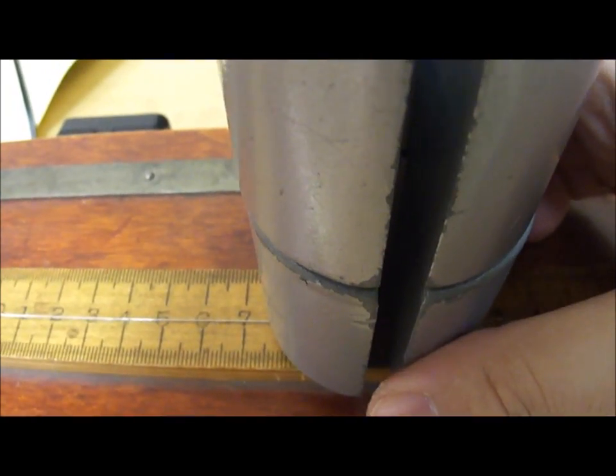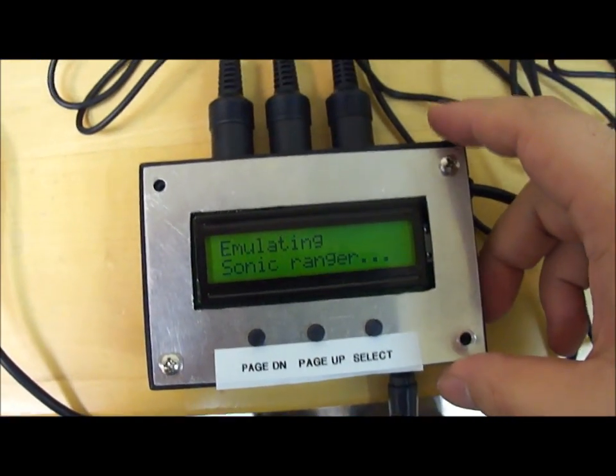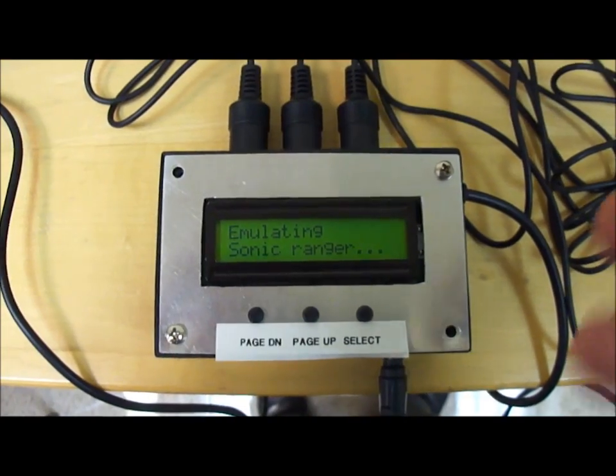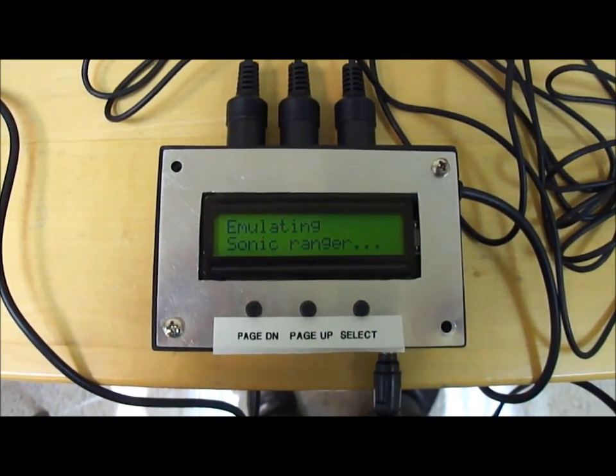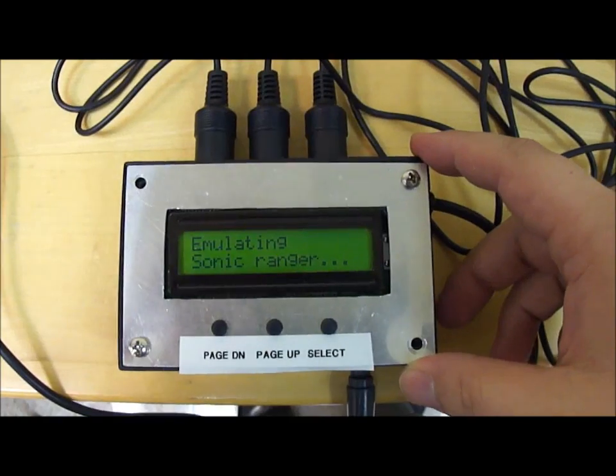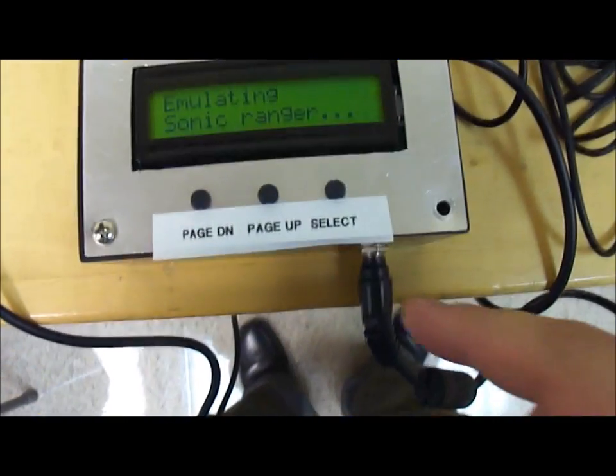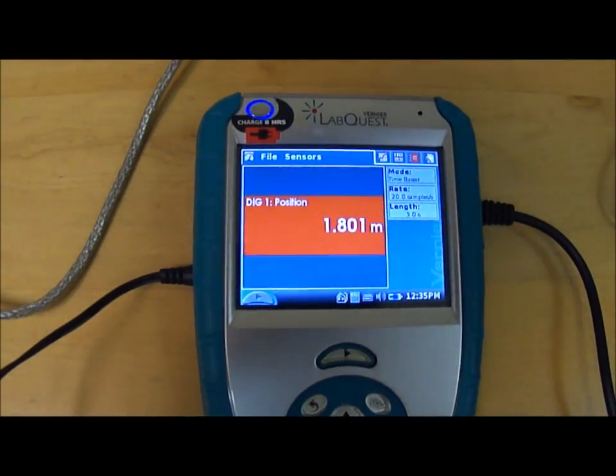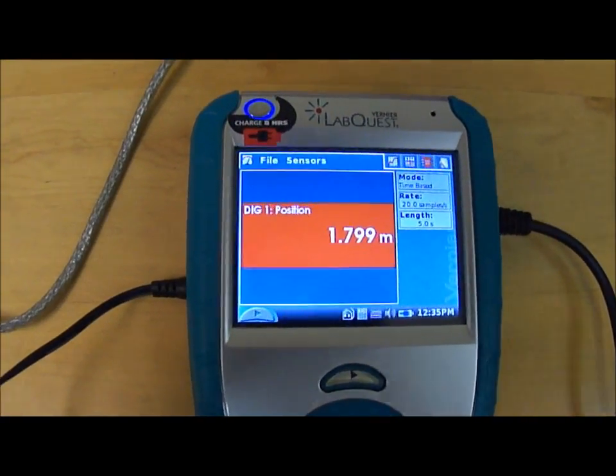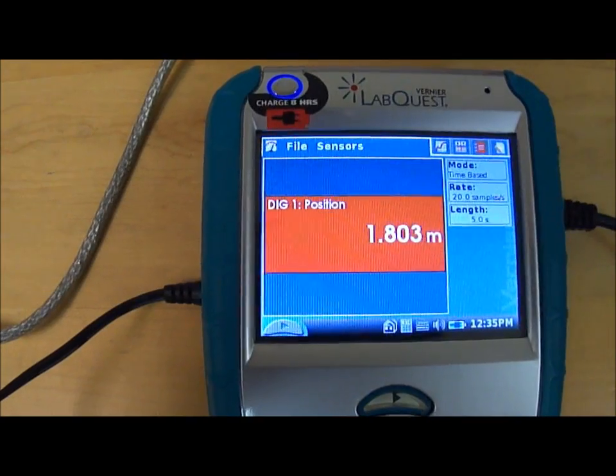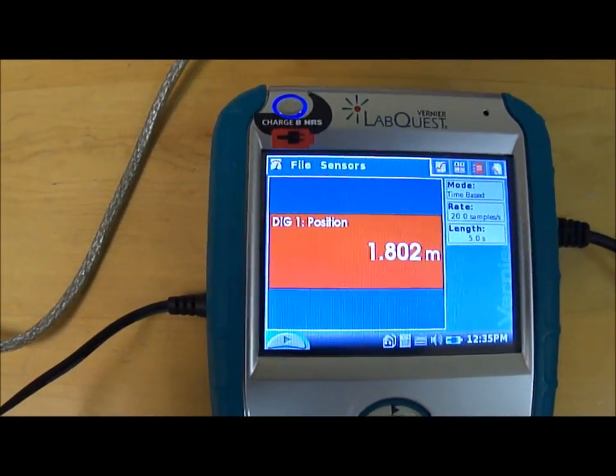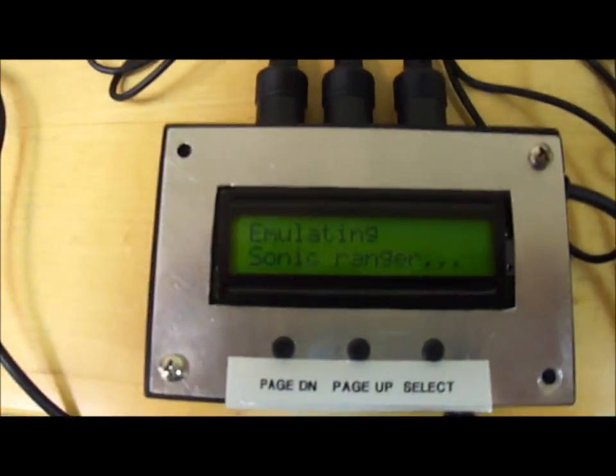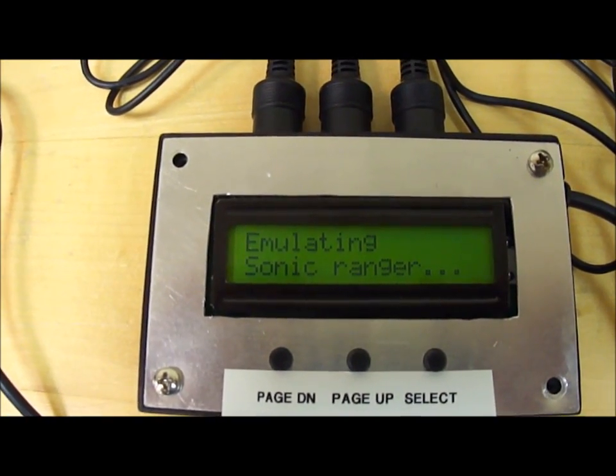And all three force gauges are connected to this box, which I call Open Source Physics Laboratory data acquisition system. I designed and made. And these are the force gauges. That's just the power supply. There's also a wire that comes out and connects to the Vernier handheld LabQuest. And you can see it's actually displaying 1.8 meters because I'm actually emulating, if I just take a quick screenshot here, it says emulating Sonic Ranger.